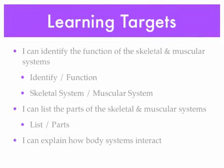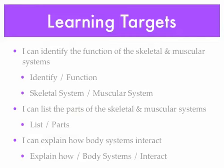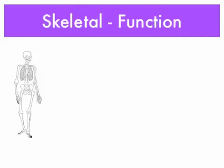The final learning target is that you can explain how the different body systems interact. The skeletal system and the muscular system are both considered body systems. To explain something means going into detail or elaborating, and interactions describe how things work together or with each other. Okay, let's get started.